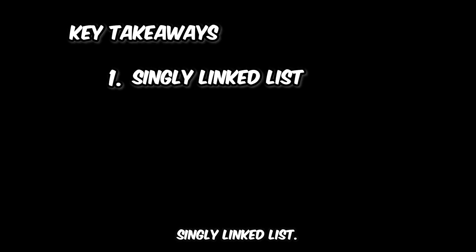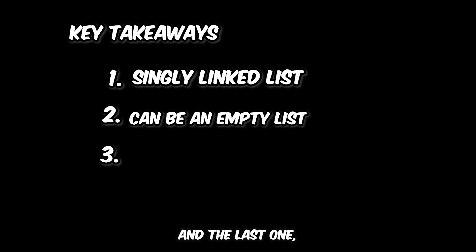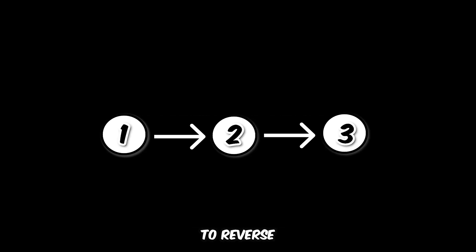So what are the key takeaways from this? The first one is that this is a singly linked list. If you see example three, we can be given an empty list. And the last one, we're already given the definition for our node. Based on the problem statement, we can calculate the best conceivable runtime, or BCR. The best runtime we can do is O(N), since in order to reverse the list, we kind of need to visit every single node to do that.